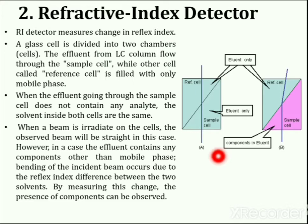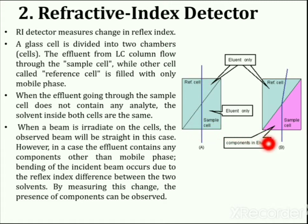In this situation, when a beam is irradiated on the cells, the observed beam will be straight — as you can see in the picture. However, when the eluent contains an analyte, the incident beam bends due to the refractive index difference between the two solvents. By measuring this change, the presence of components can be observed. Refractive index detectors have lower sensitivity compared to UV detectors, which is the main reason they are not commonly used.